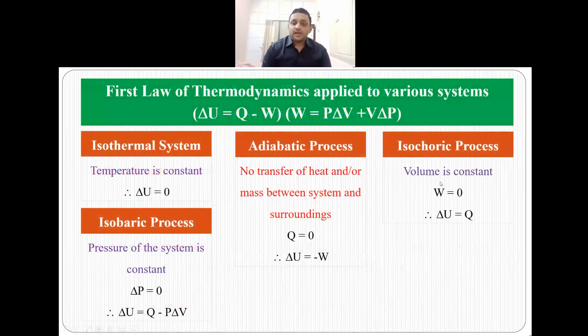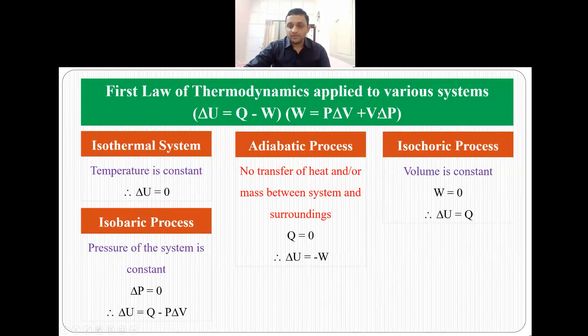Now how this first law of thermodynamics can be applied to various systems? So we know delta U equals to Q minus W and we also know that work done is multiplication of pressure into volume and here since we are talking about work done by the system, it is P delta V plus V delta P.